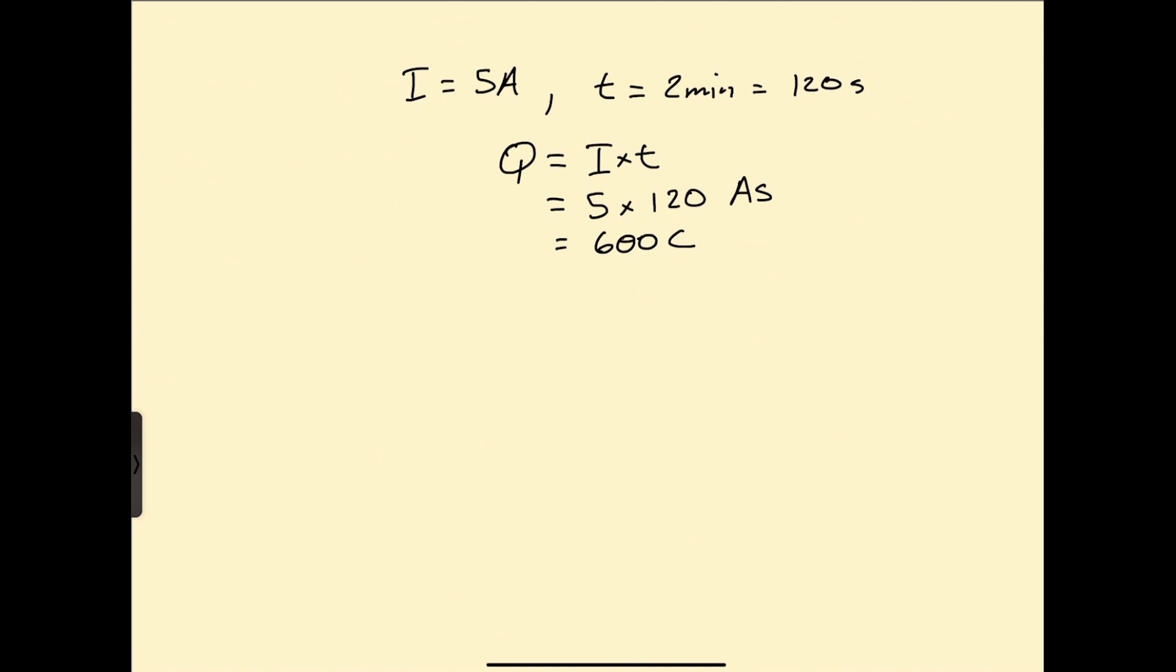So in our case, 5 amperes is maintained for 120 seconds and we times that together, we get 600 Coulombs and that is equal to what we have here. That's how we find the quantity of electricity transferred. See ya!